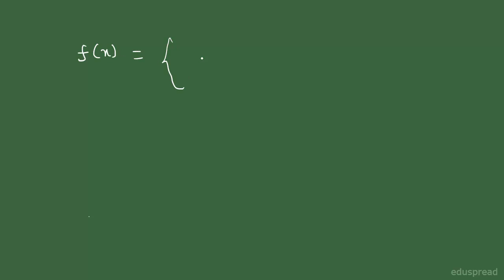Whenever you know that the random variable is uniformly distributed, either given in the question or supported by data, you can use a formula to write the uniform probability density function. The formula is: f(x) is equal to 1 divided by (b minus a) for values of x between a and b.